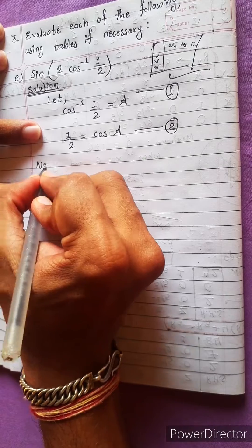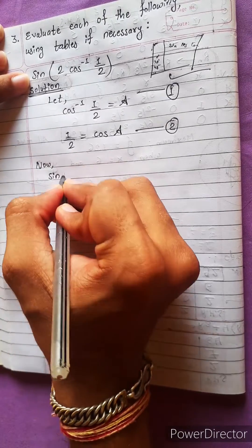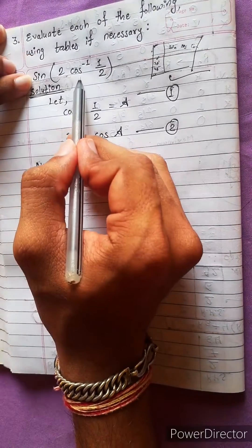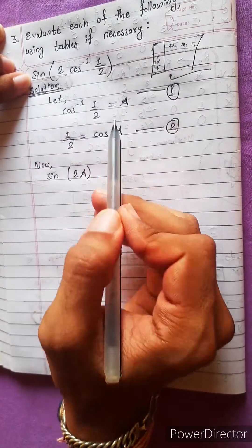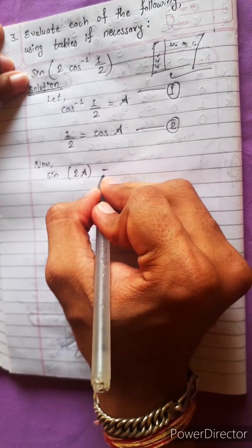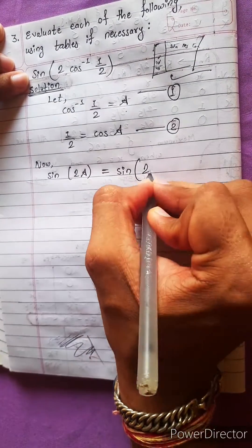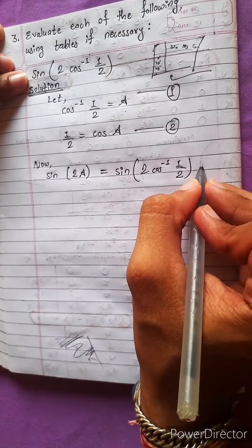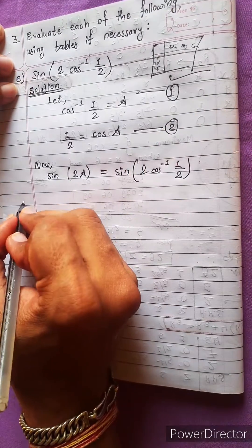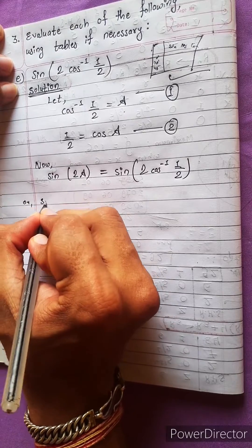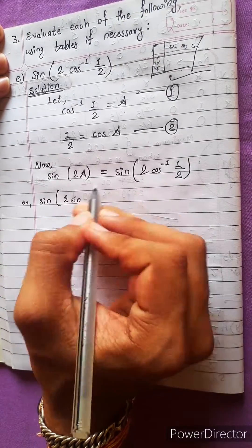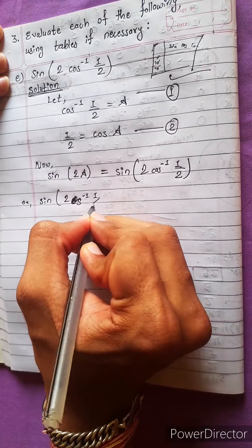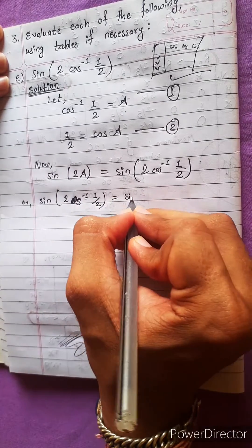Now what is given in the question? It is sin(2A). How we got 2A? Because cos⁻¹(1/2) = A. So sin(2A) equals sin(2·cos⁻¹(1/2)). We got this from equation 1. Or we can say: sin(2·cos⁻¹(1/2)) = sin(2A).